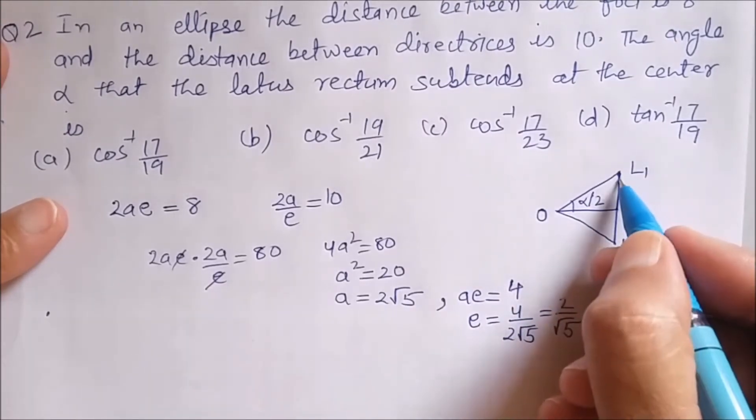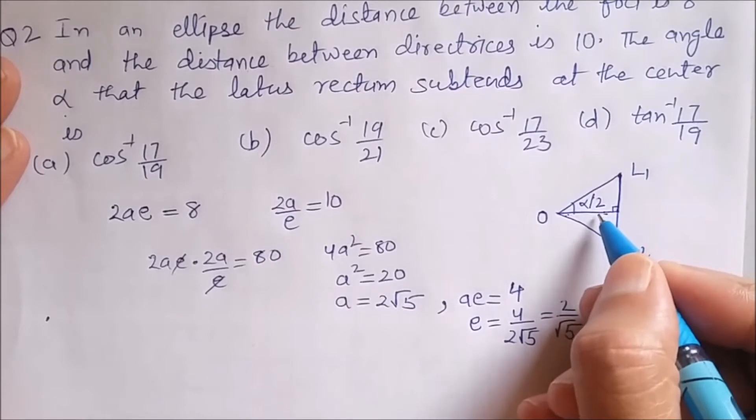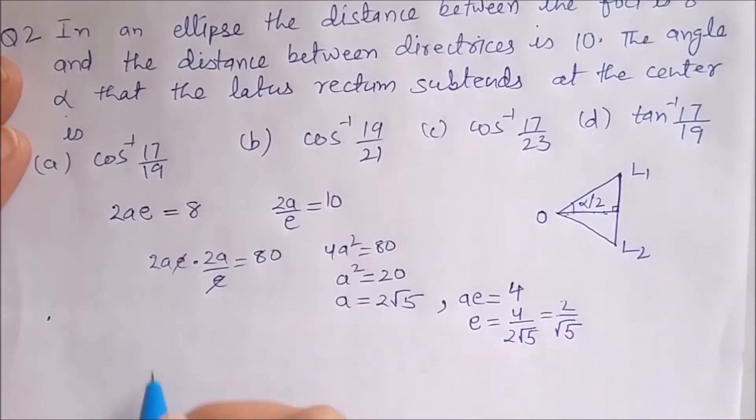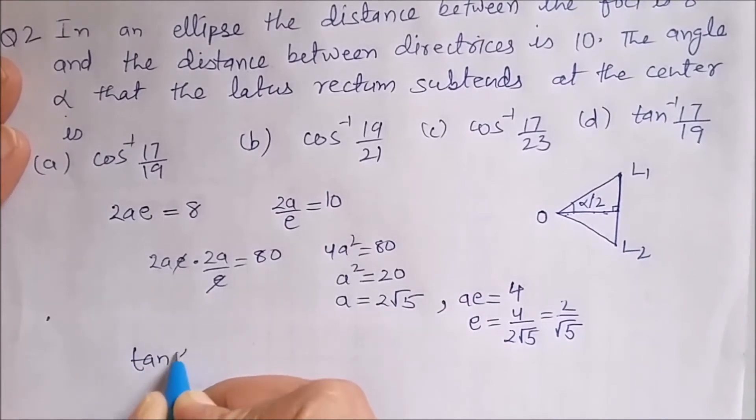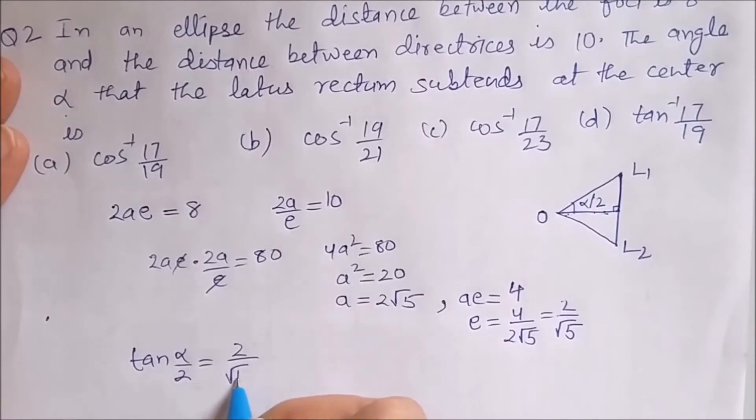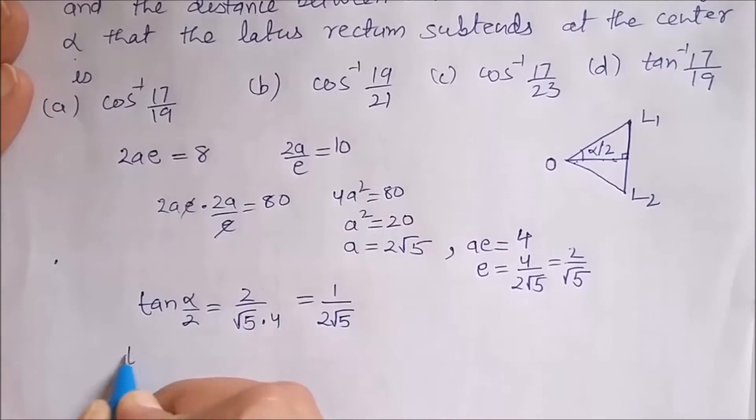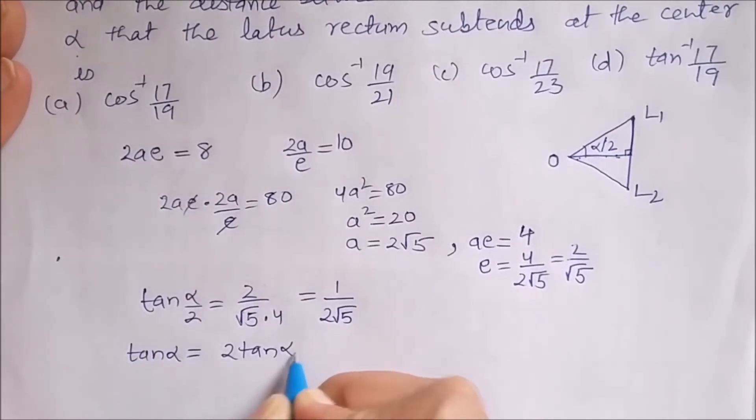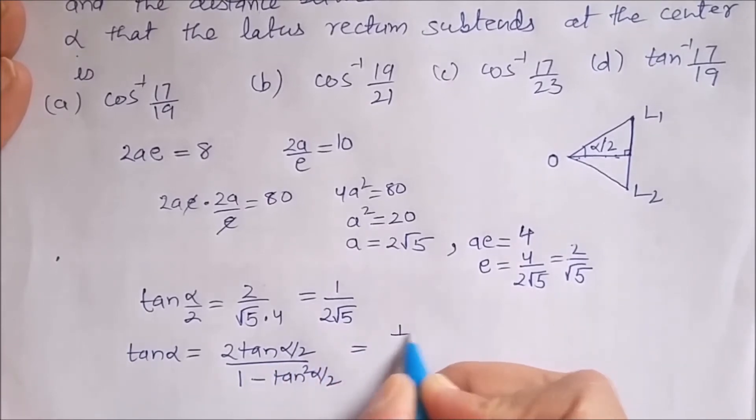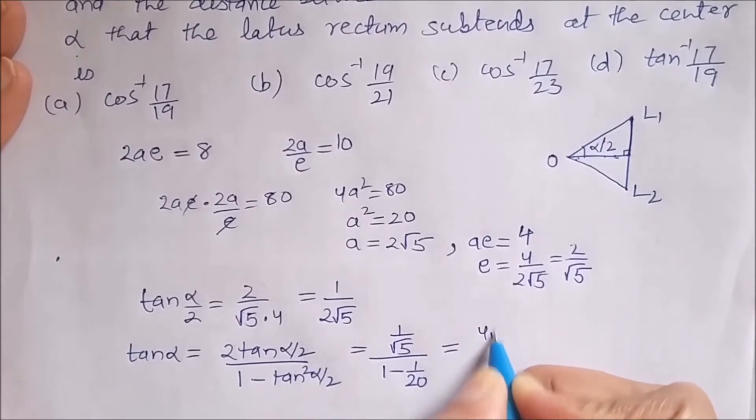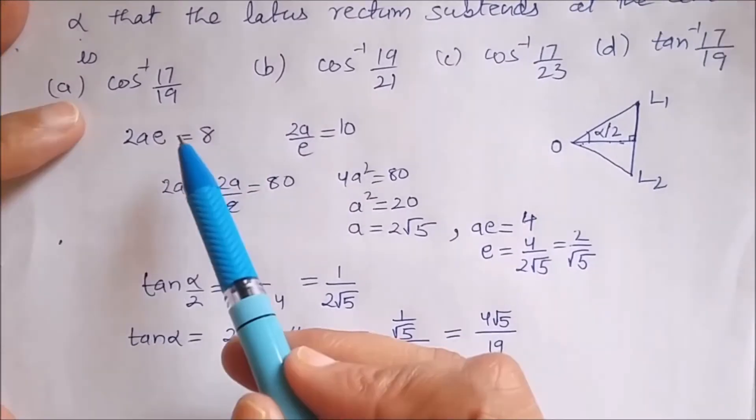Now this angle is α/2. Now in this right angle triangle, this distance is ae that is 4 and this distance is 2/√5. So we can say that tan(α/2) = (2/√5)/4. This will give me 1/(2√5) and we know that tan α = 2tan(α/2) / (1 - tan²(α/2)). So 2 times tan(α/2) is 1/√5 and this is 1 - 1/20. So this will give me 4√5/19. Now our options.